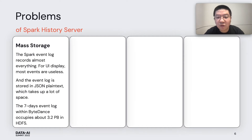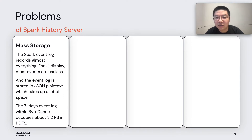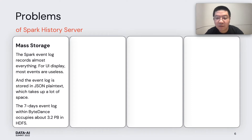The first defect is storage waste. The Spark events are very detailed, resulting in a large amount of events recorded in physical storage, but most of the events are useless for historical UI display. The event log is generated and stored in JSON plain text, which takes up a lot of disk space. Especially in some complex and long-running applications, a single event log can reach 10 gigabytes. Inside ByteDance, I found that persistent seven-days event log files in a cluster took over three petabytes of HDFS.